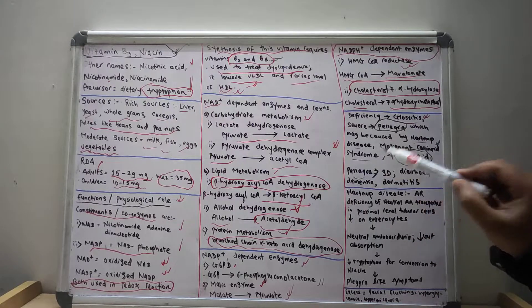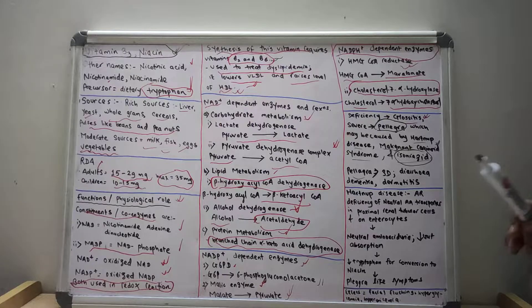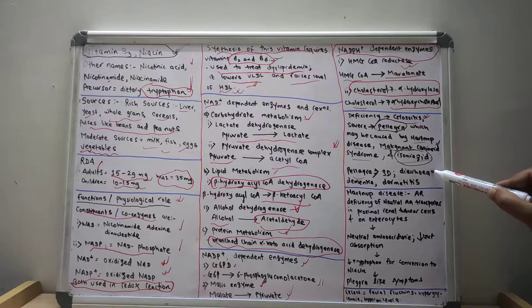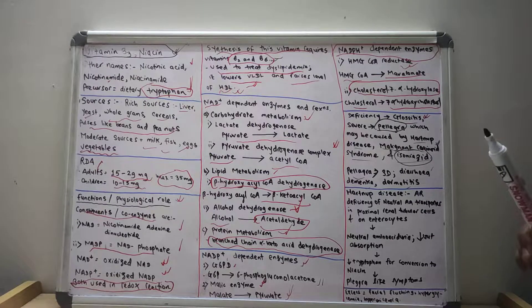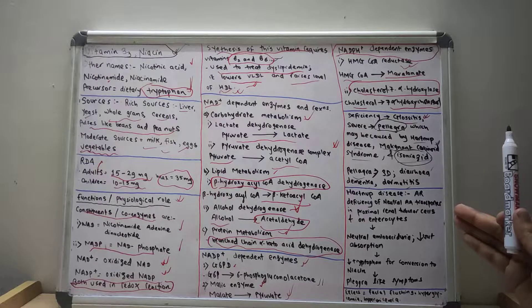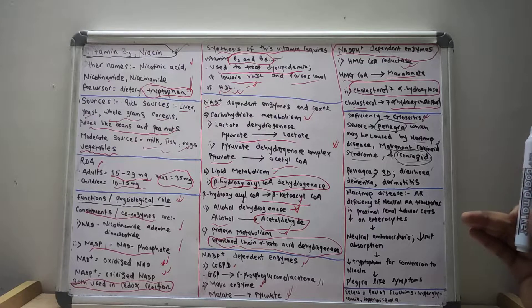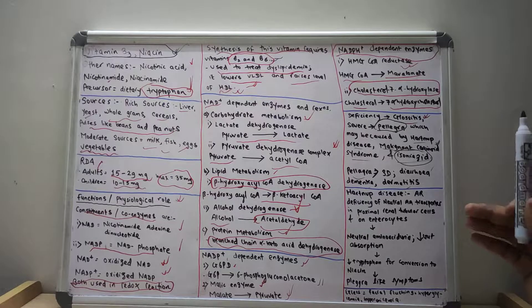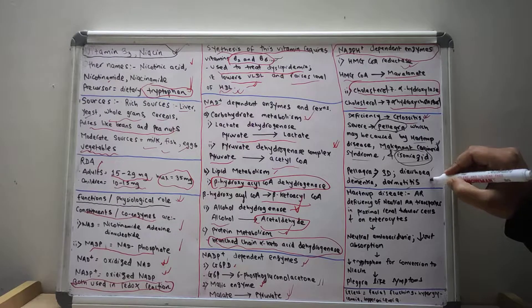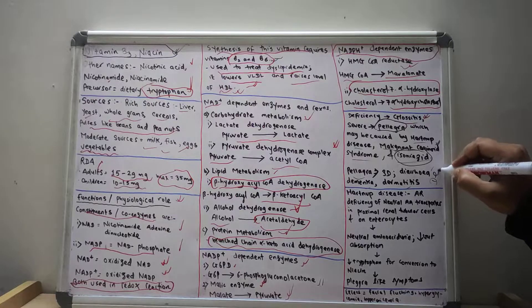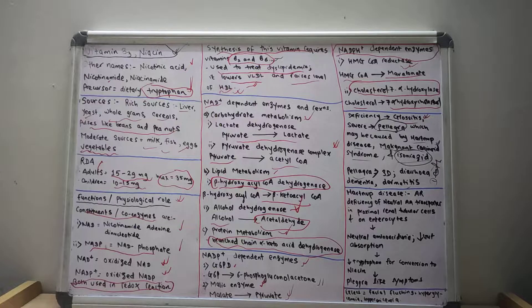The symptoms of pellagra are known as the 3 Ds: diarrhea, dementia, and dermatitis. If pellagra is not treated in time, a 4th D — death — is added, making it the 4 Ds of pellagra.